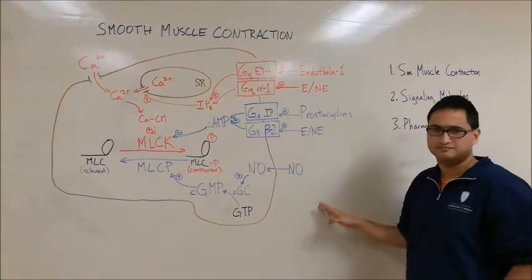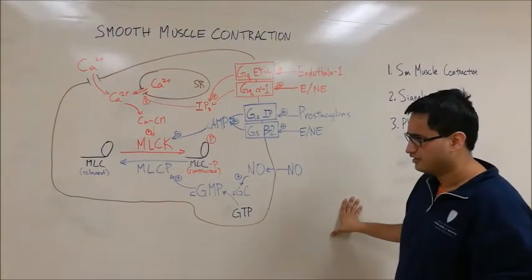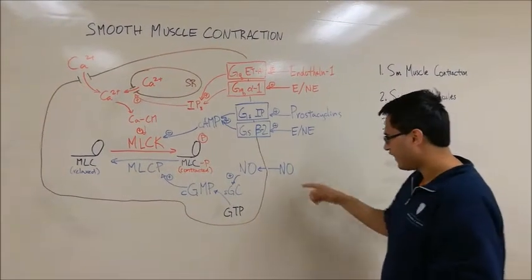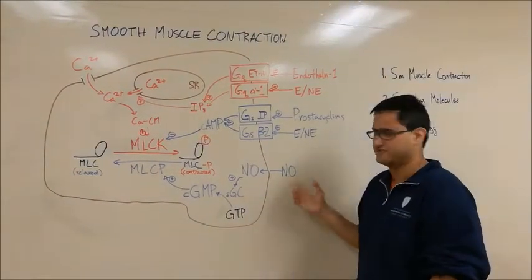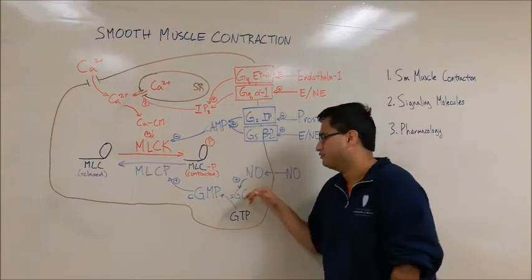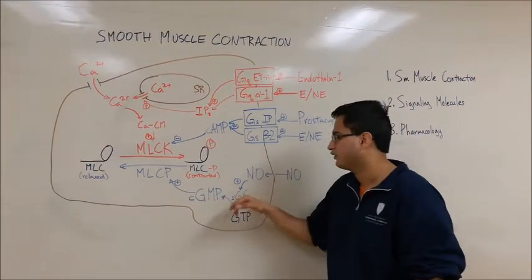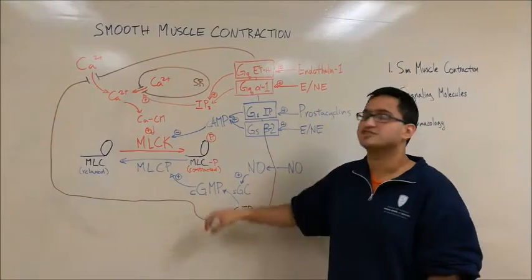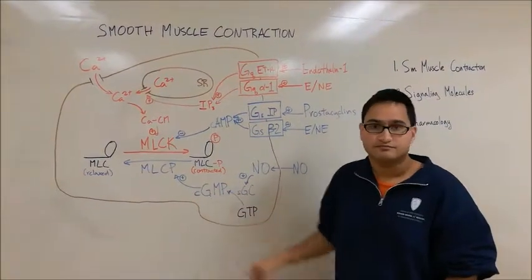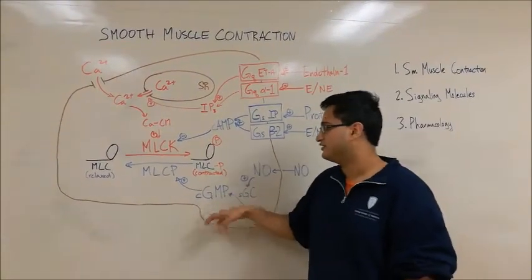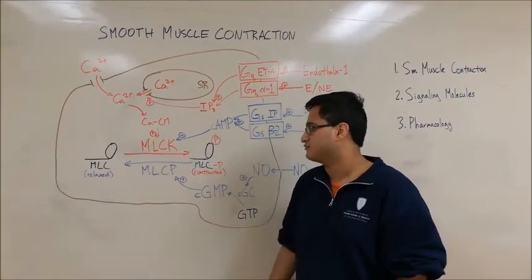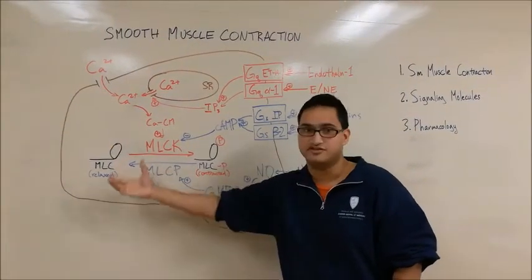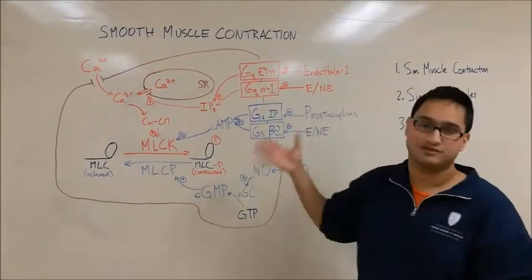Finally, we have nitric oxide, which is also produced by endothelial cells. Since it's not a large molecule, it can diffuse directly into the membrane and bind to soluble guanylyl cyclase in the cytosol. This converts GTP into cyclic GMP. Cyclic GMP then activates MLCP, promoting dephosphorylation and therefore relaxation. So nitric oxide is also a vasodilator.